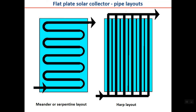There are two pipe layout types in flat plate collectors. The serpentine or meander layout has just one continuous pipe in series — higher pressure loss, but easier to manufacture and lower cost. The harp layout has a header at the top and bottom with tubes in between — water enters at the bottom, rises when heated, and exits at the top. These are the two main layouts used in flat plate solar thermal collectors.